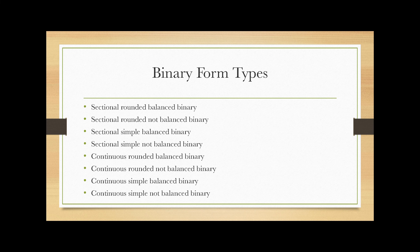Together, these four examples illustrate some of the possibilities of different types of binary forms. If we have two categorizations for the first part, two for whether there's a reprise, and two for whether the end rhyme is present, that gives a possibility of eight different types of binary forms. All eight types can be found in the repertoire, and this video provides a subset as an introduction to this really interesting and important form.